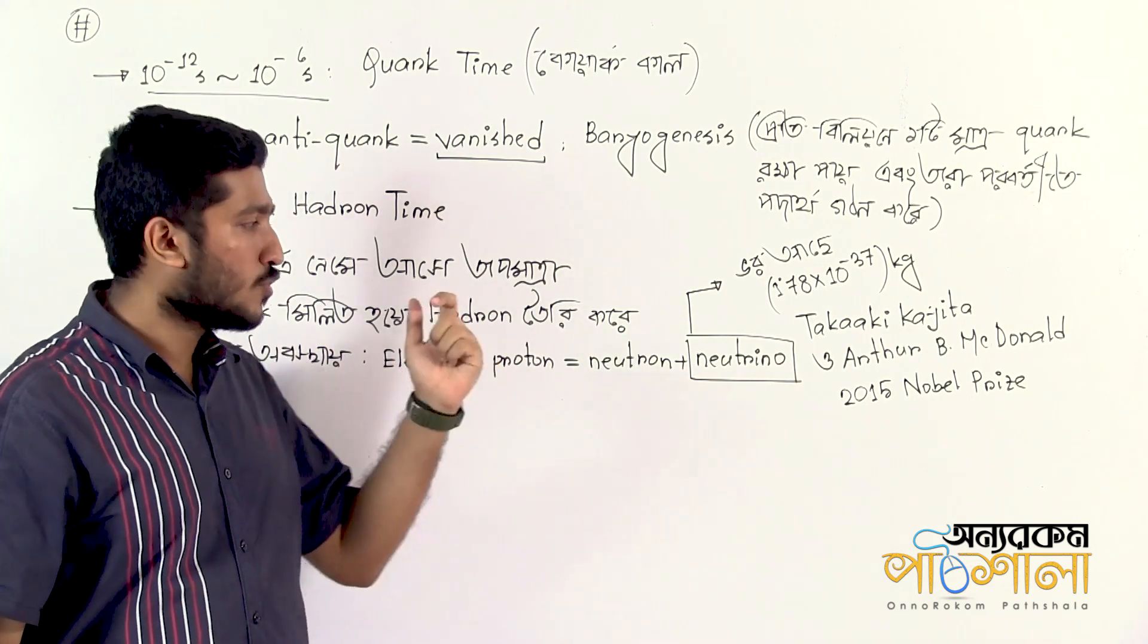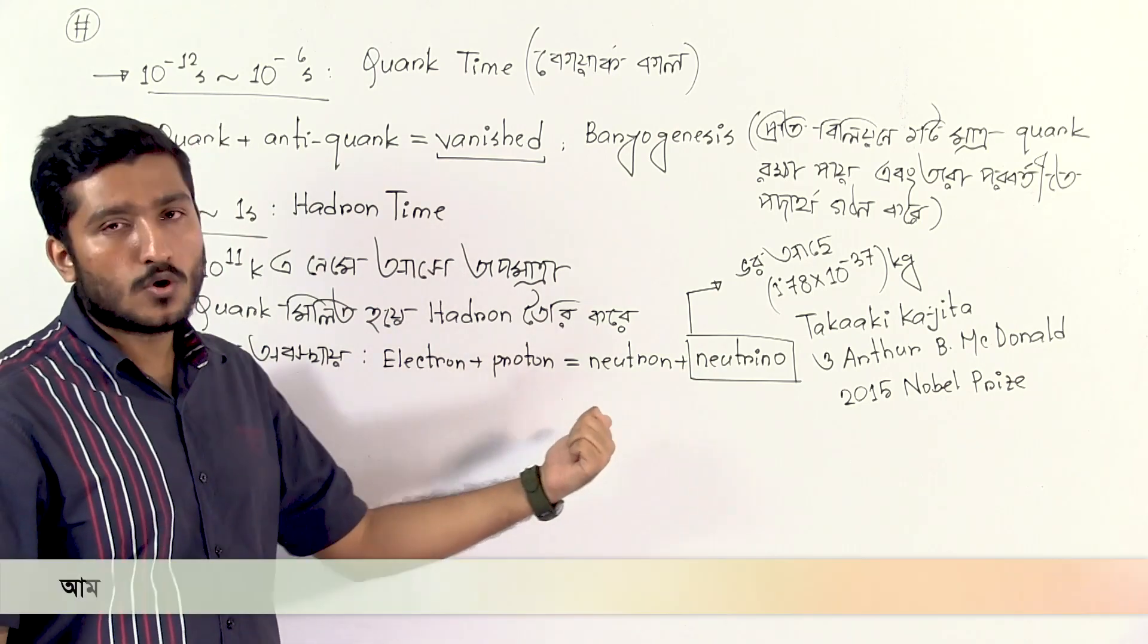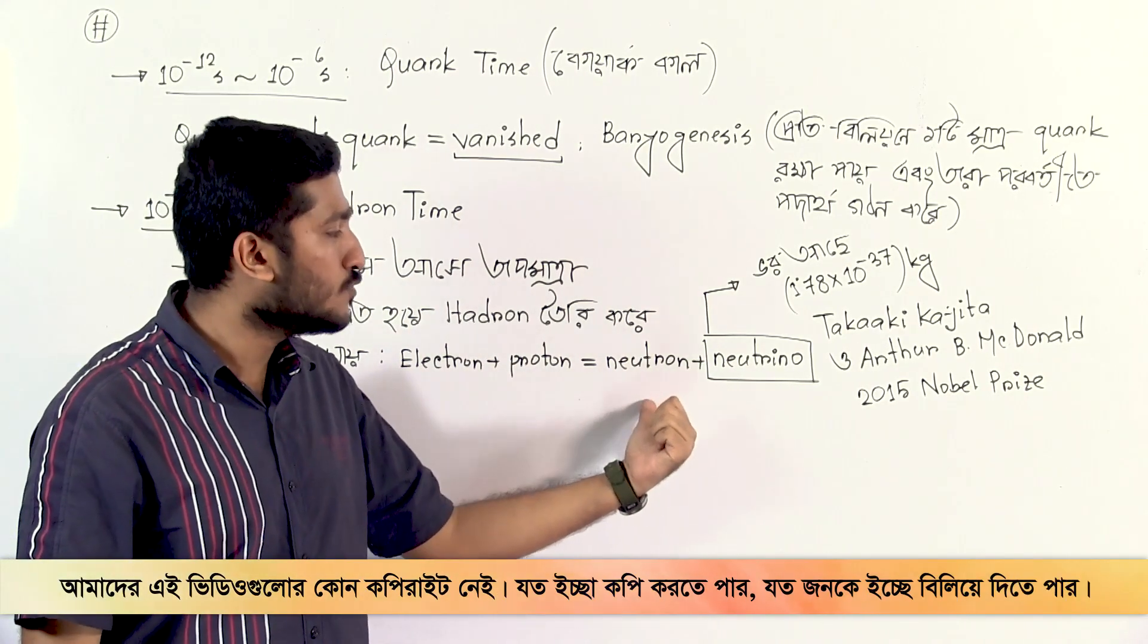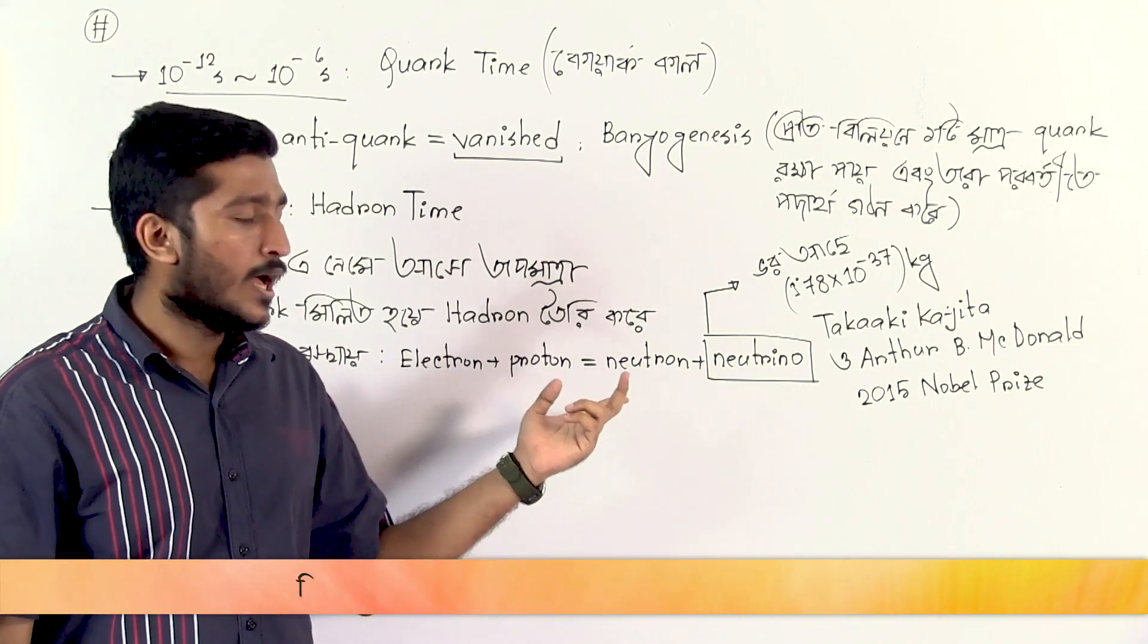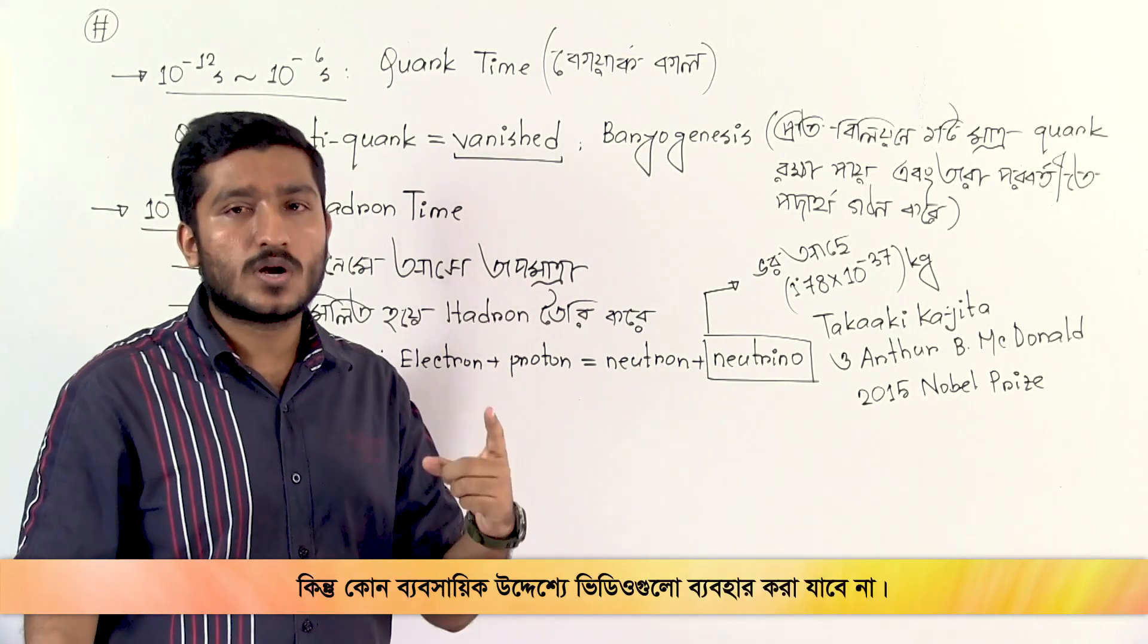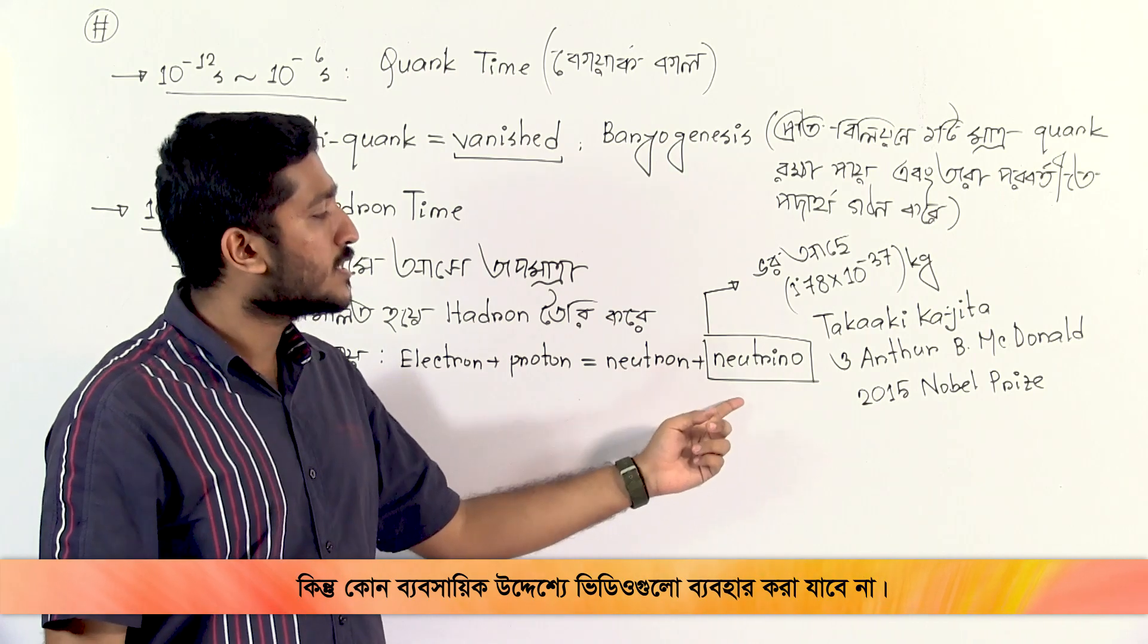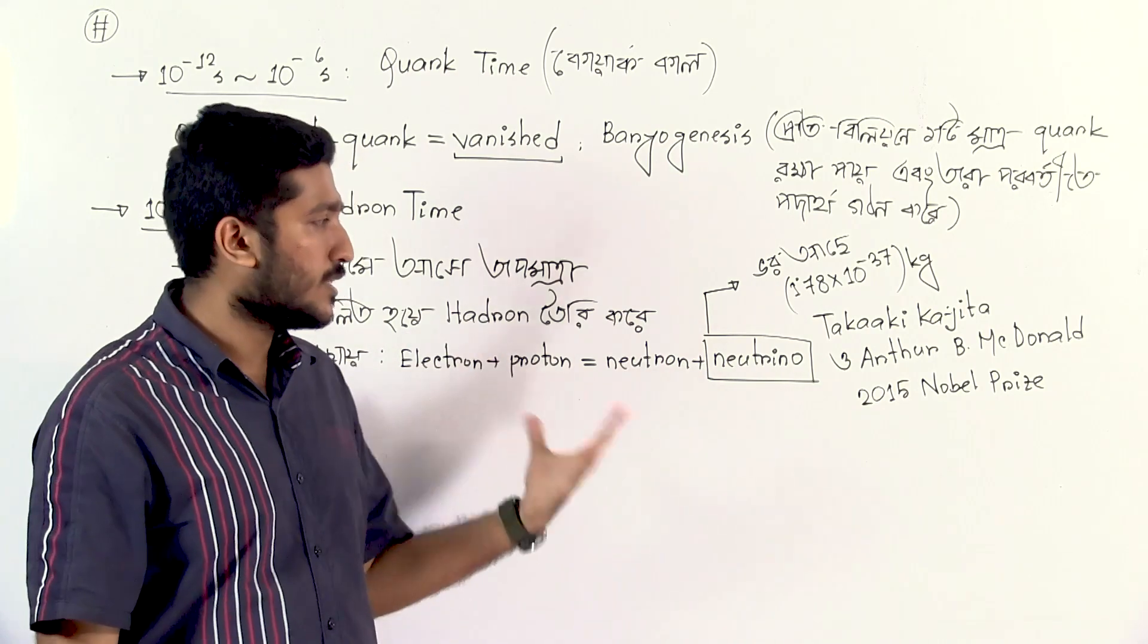Understanding the internal structure: protons consist of up quarks and down quarks, while neutrons have a different combination of up and down quarks. The specific arrangement of these quarks determines whether the particle is a proton or neutron.